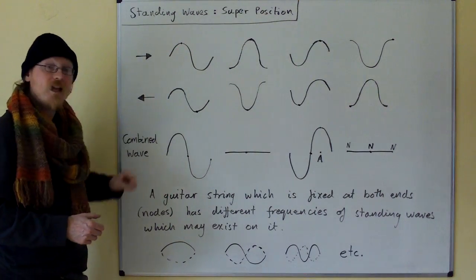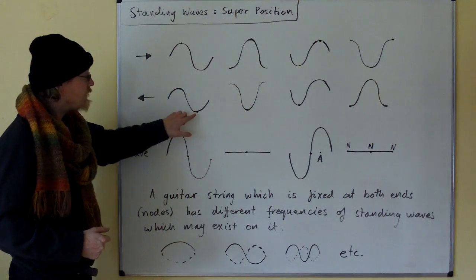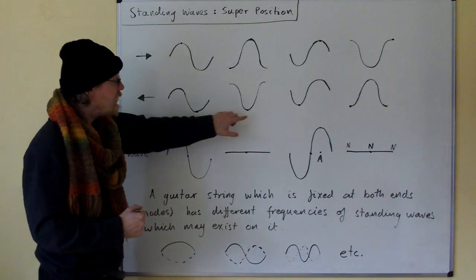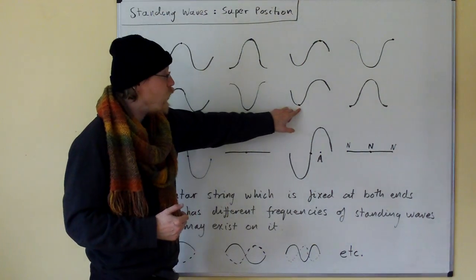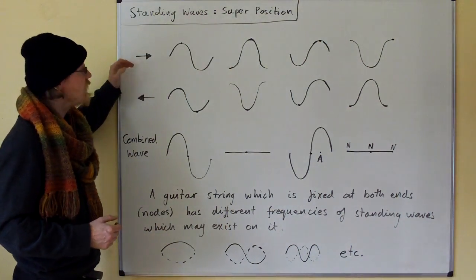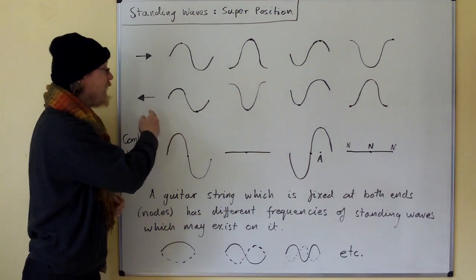How do we know that this wave is traveling to the left? Well, let's look at this trough. This trough is past the middle, then it's at the middle, then it's before the middle, then it's at this edge. So we can clearly see that this wave is going to the left.